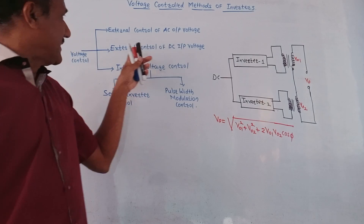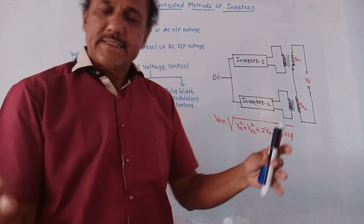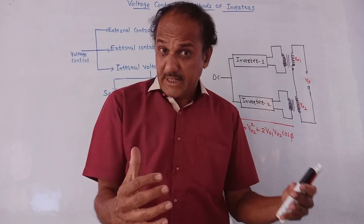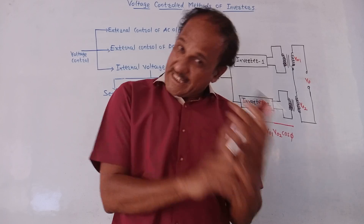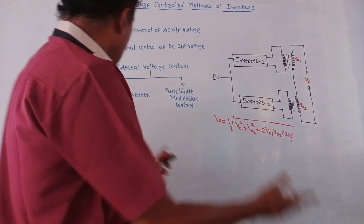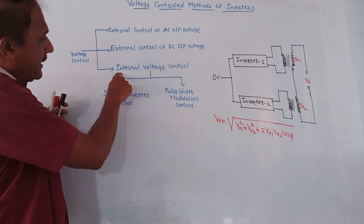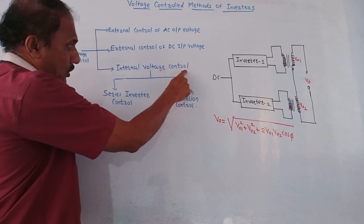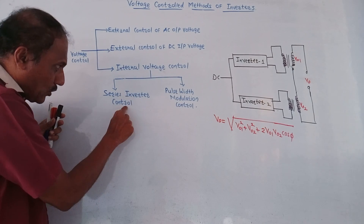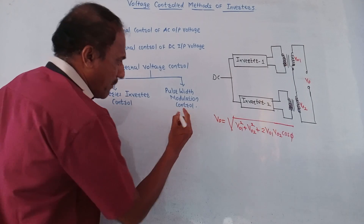We discussed these two methods. Especially in the case of external control of DC input voltage, the block diagram contains a filter block, which makes the circuit expensive and also reduces the efficiency of the circuit. The next — third — technique of voltage controlling is internal voltage control. There are two types: the first is series inverter control, and the second is pulse width modulation, which is PWM.